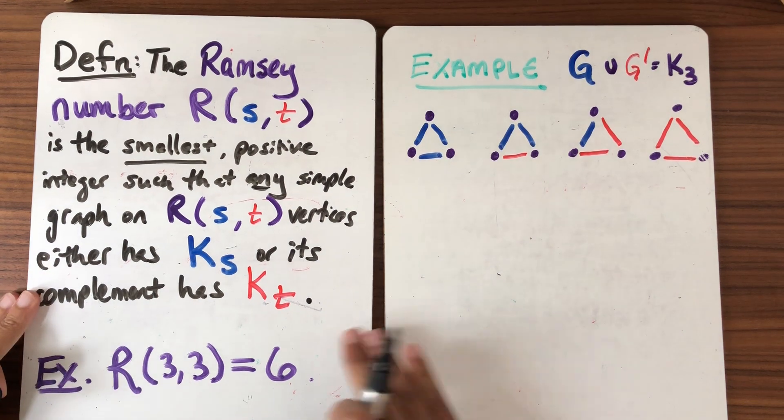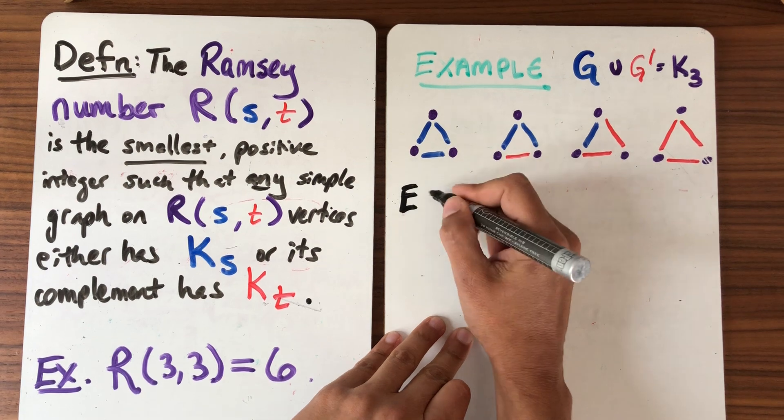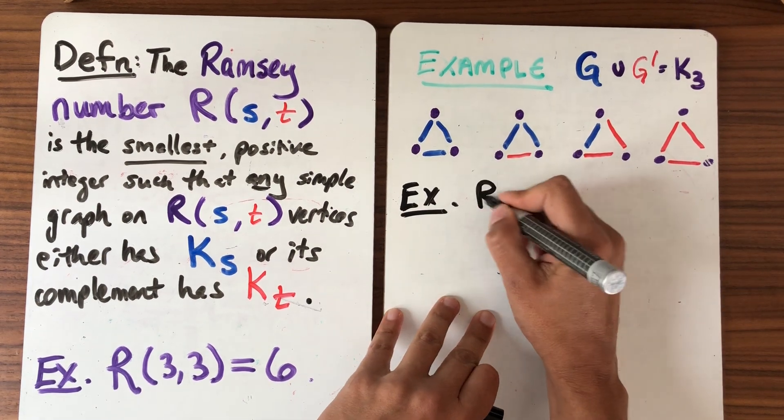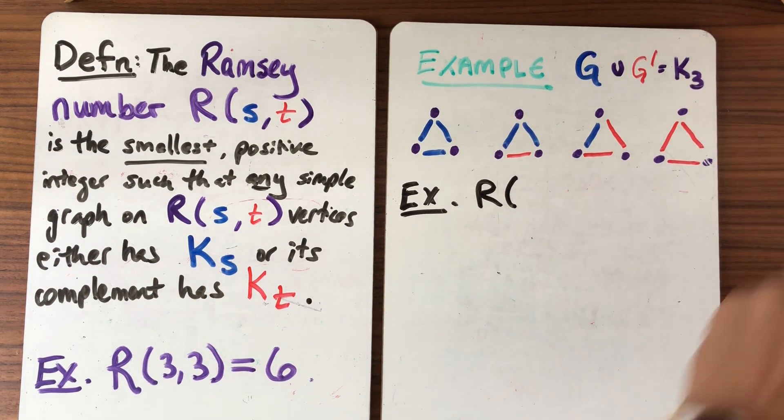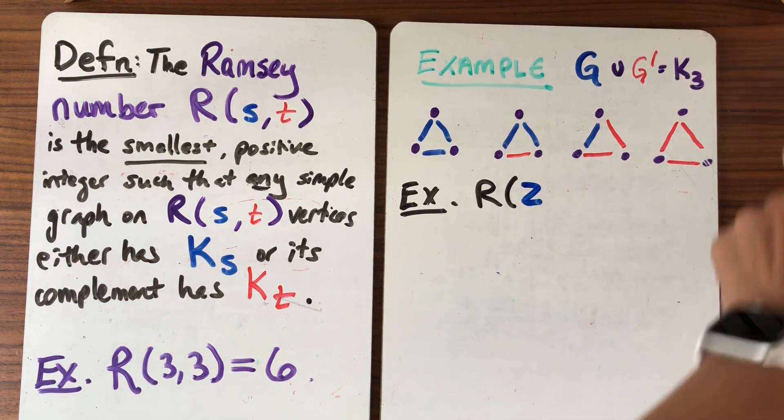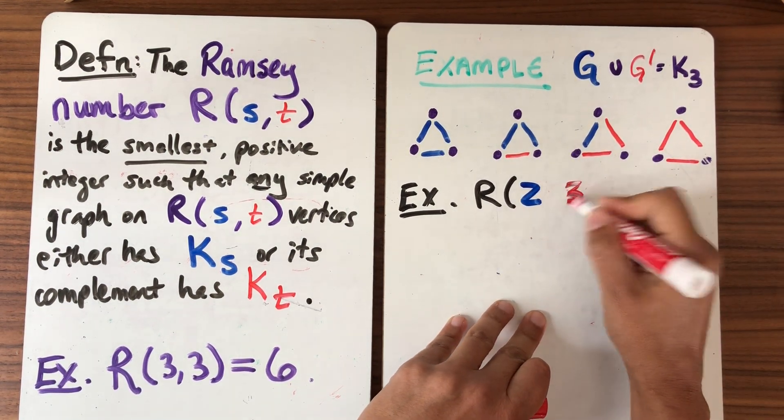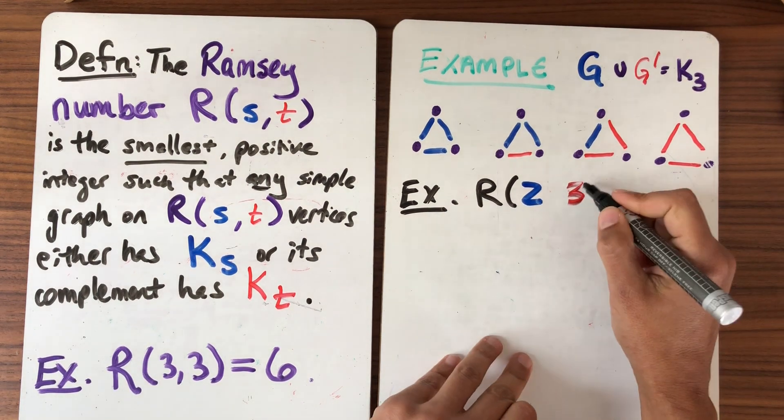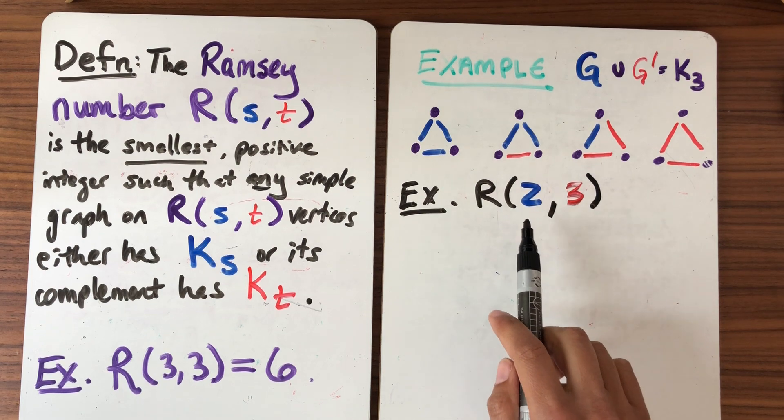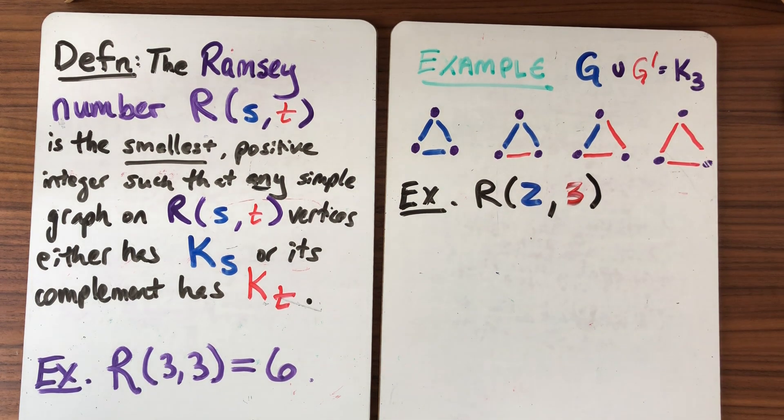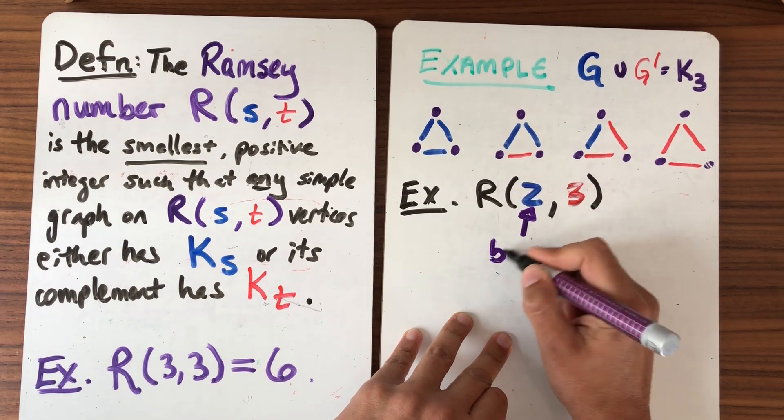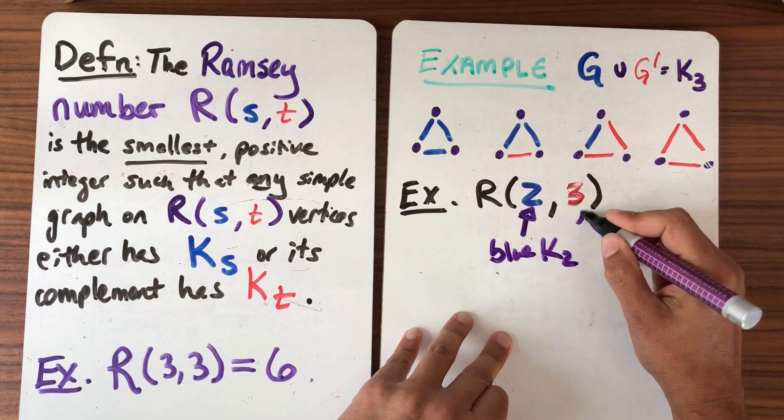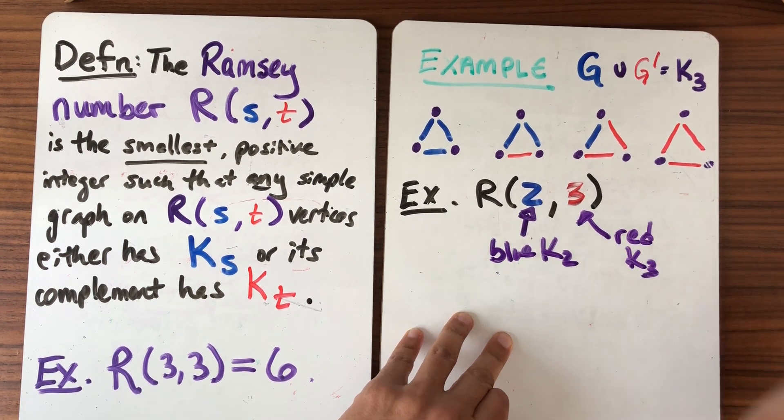So just following on to this example we can compute other Ramsey numbers other than just this one. So for example let's compute the Ramsey number of, let's see, R, maybe I'll stick with my colors here, 2, 3. What is R(2,3)? So what does this mean when I say what is R(2,3)? I want to find the smallest number, so the smallest complete graph K, that I can find so that no matter how I color it either I get a blue K_2 or I get a red K_3. So that's what I want.